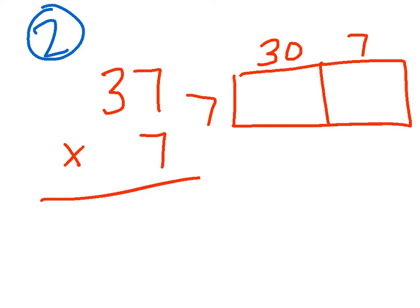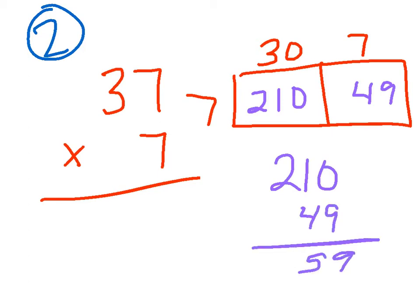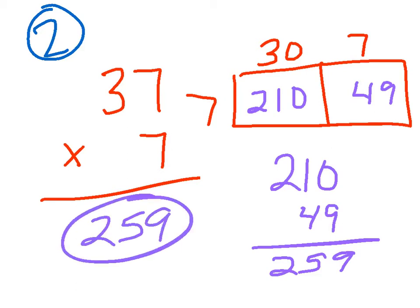I know, and to get into this box, I do 30 times 7, which that becomes 21, add my 0, and then 7 times 7 is 49. Then I come down here and just add those 2 up, and I come with 259 as my answer.